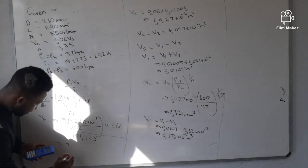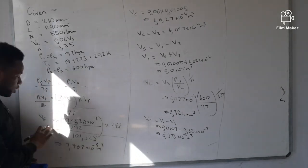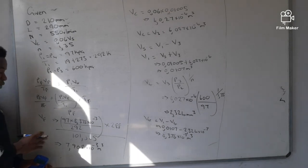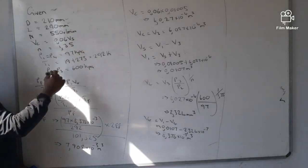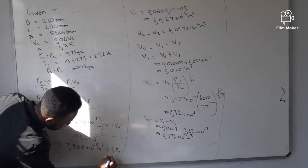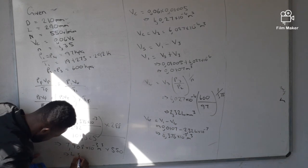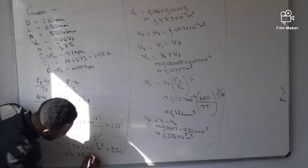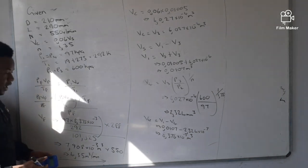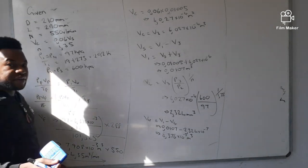This is the free air volume per cycle. But they want the free air delivered per minute, so we multiply by the speed: 7.908 × 10⁻³ × 550 = 4.35 cubic meters per minute. This is the final answer for the free air delivered. The more you practice, the more you'll understand it. Catch me on my next video where I'll be doing a different topic. Thank you for watching.